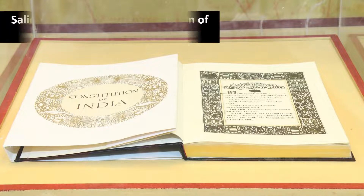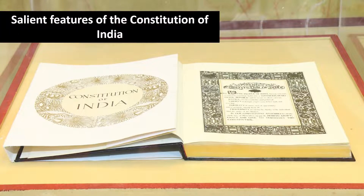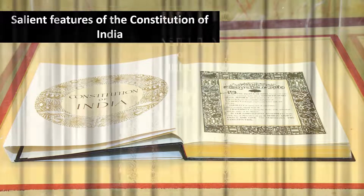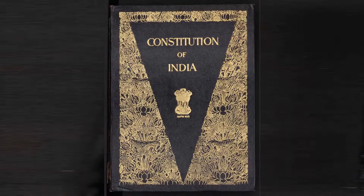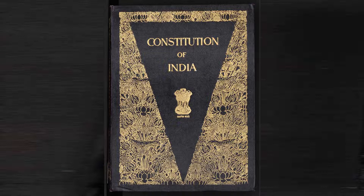The salient features of the constitution of India: first, it is a written constitution — the longest written constitution consisting of 395 articles and 12 schedules. It reflects the ideology of the nation and is the supreme law of land.